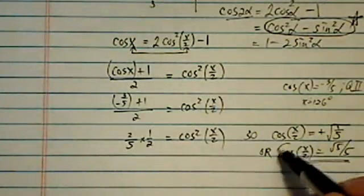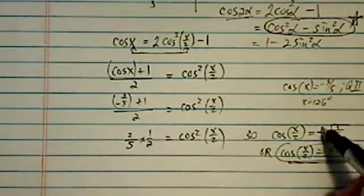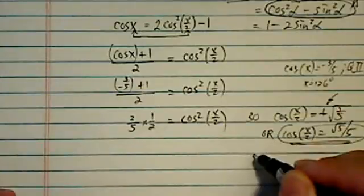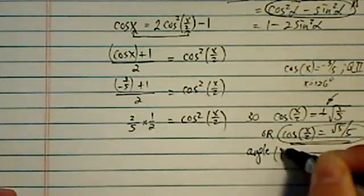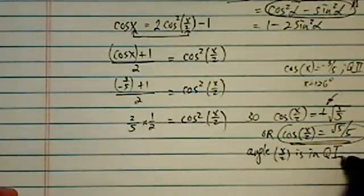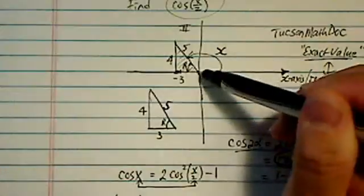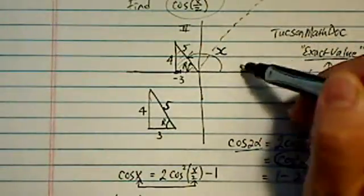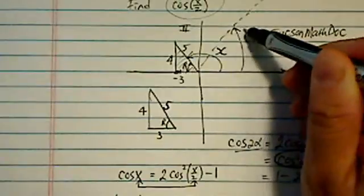Now the reason this one is a positive, and I picked a positive over here, is because I know the angle x over 2 is going to be in quadrant 1. Okay, so earlier from my picture here, x is in quadrant 2. Half of x is going to land in quadrant 1. This is half of x.